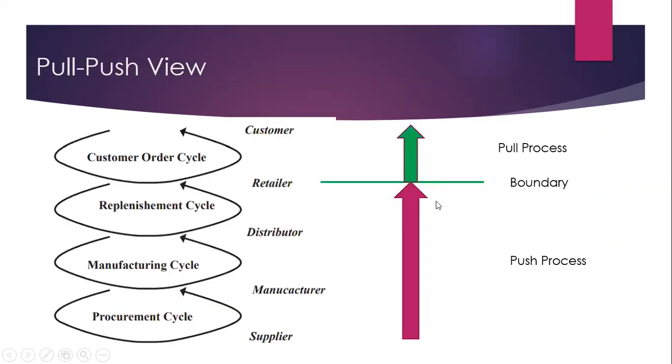Next is the Pull-Push View. There is a Pull Process, which is when the Customer wants to buy something from the Retailer. The Customer pulls the Product, so it is a Pull Process where the Customer is pulling the Product.